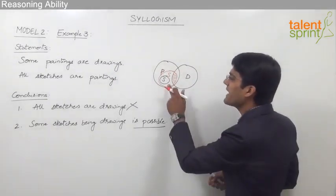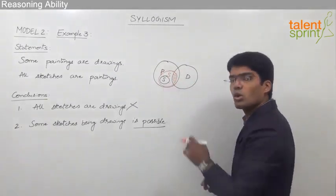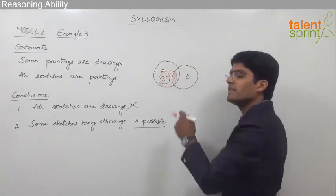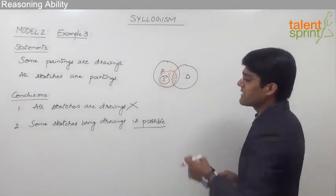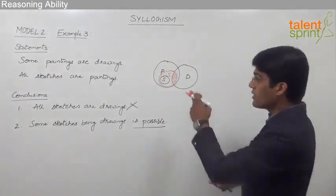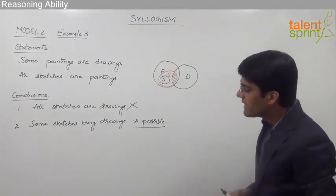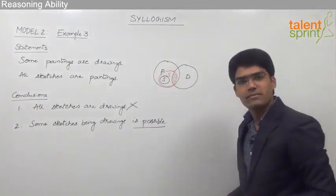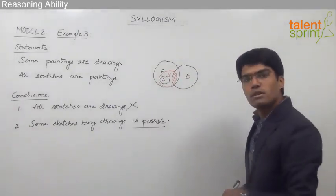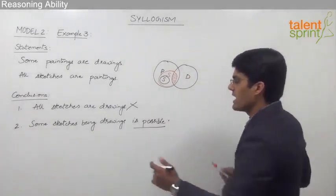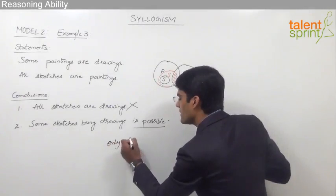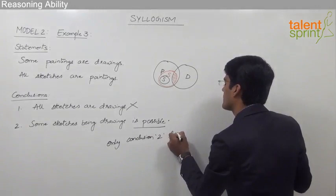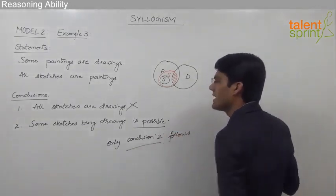In the basic diagram sketches and drawings do not overlap, but if we draw sketches so that they overlap a little with drawings, some sketches can be drawings while still following both given statements. So 'some sketches being drawings is possible' is true in the red case. Therefore conclusion two follows, and the answer is: only conclusion two follows the given statements.